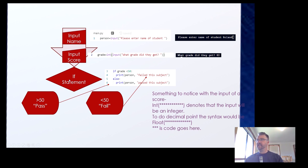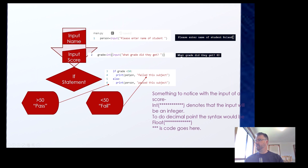Now, to make a decision, we need an if statement. If grade is less than 50, colon — then there's an automatic indent — and we have: print(person, 'failed this subject'). Else, print(person, 'passed this subject'). So if I got a score above 50, it would pass and bypass the fail branch. If I got a score less than 50, it would go to that point and print failed the subject. In this case with a score of 40, it's going to print failed the subject.